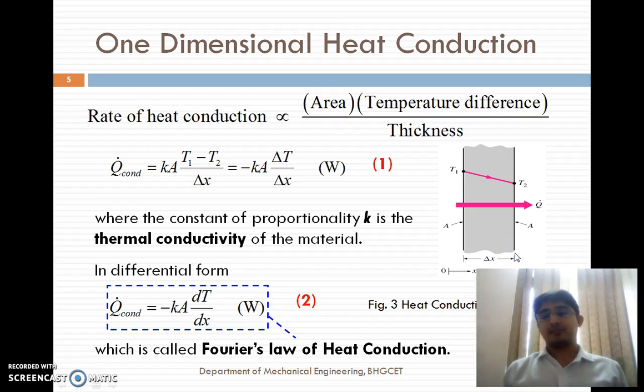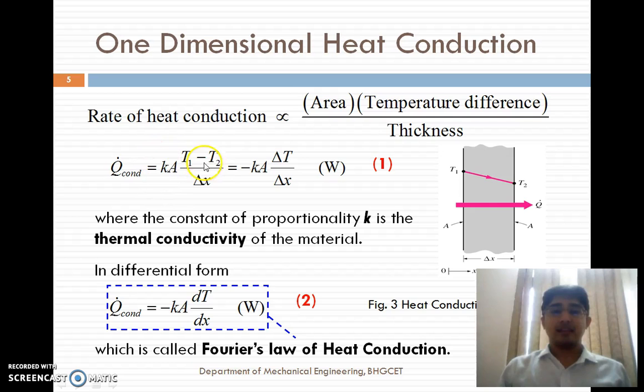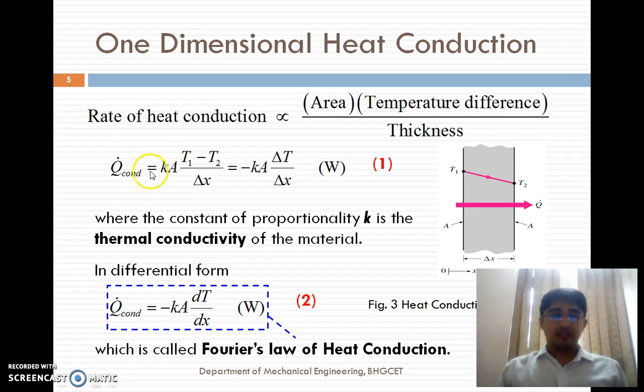The rate of heat transfer by means of heat conduction equals K, where K is the constant of proportionality, also known as the thermal conductivity of the material. A larger value of thermal conductivity gives a larger rate of heat conduction. So the rate of heat conduction Q = K × A × (T1 − T2) / Δx, where A is the area normal to the direction of heat transfer and Δx is the thickness of the material. In differential form, Q-dot = −K·A·(dT/dx), which is called Fourier's Law of heat conduction.